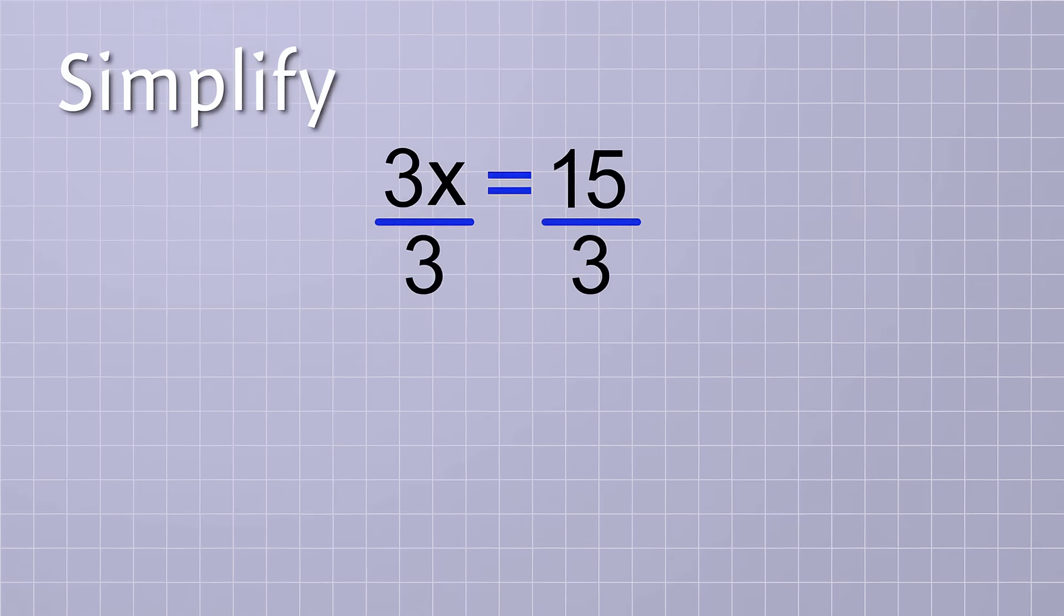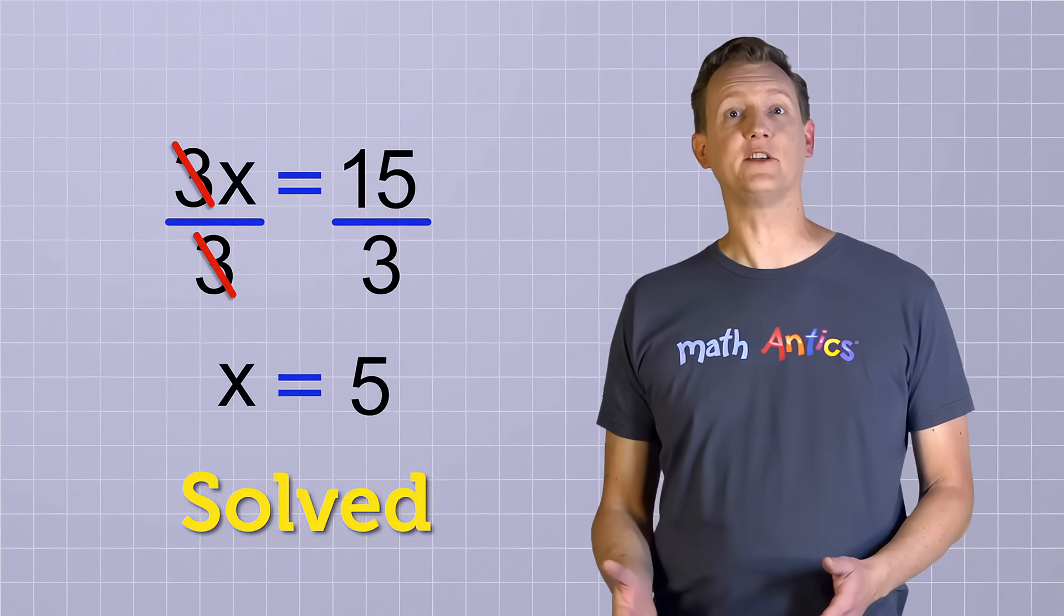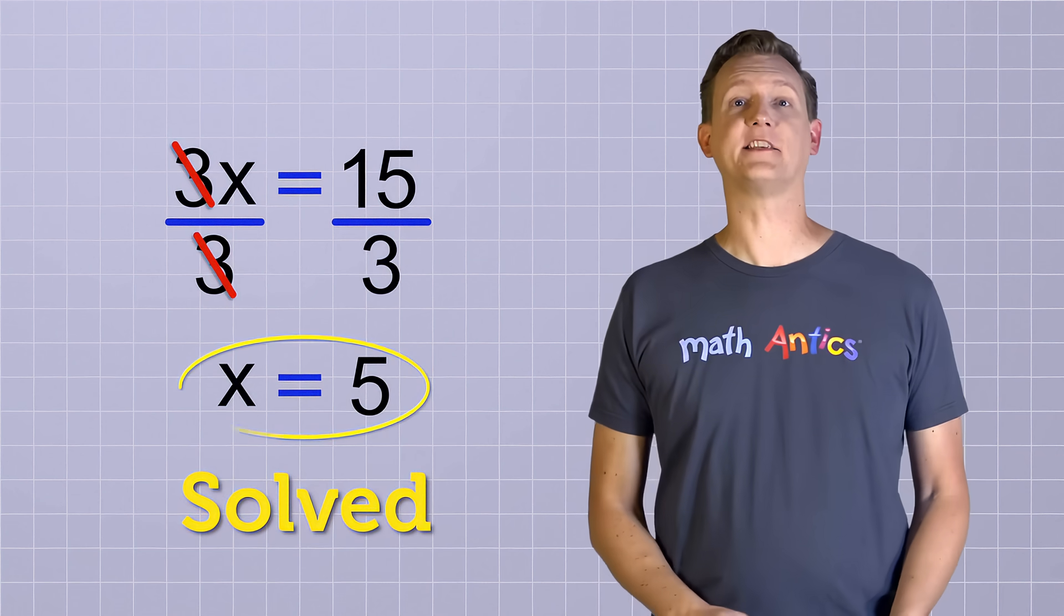The next step is to simplify. The 3 on the top and the 3 on the bottom on this side cancel, because 3 divided by 3 would just be 1. This is just like cancelling common factors when you're simplifying a fraction. That leaves us with just x on this side. And on the other side, we have 15 divided by 3, which simplifies to 5. There, we've solved our equation by changing it into the simplified form: x equals 5.